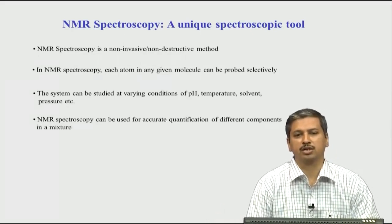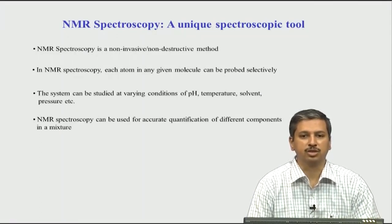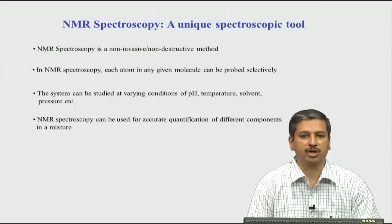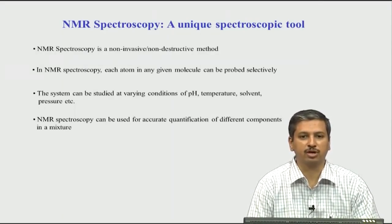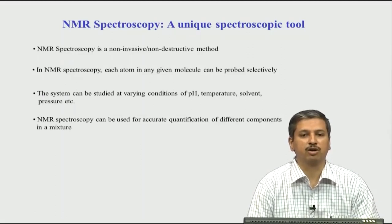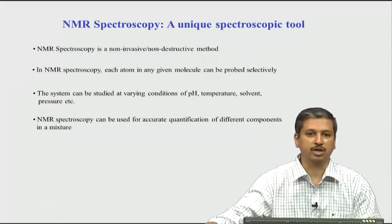NMR spectroscopy is also a very quantitative technique. You can actually quantify the amount of sample present in your study, which differs from many other techniques. Because the sample is not destroyed, you can preserve and measure the quantification — what amount of sample is present. This is very useful for applications such as metabolomics, where you look at the quantity of different components in a given mixture and determine their relative amounts.